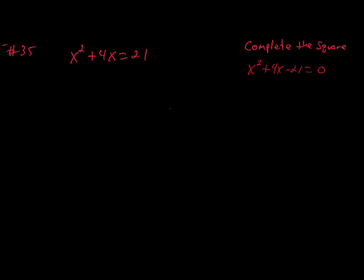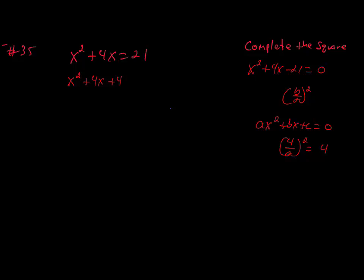So we're going to add 4 over 2 squared to both sides. Simplifying, 4 over 2 is 2, and 2 squared is 4. Adding 4 to both sides gives us x squared plus 4x plus 4 is equal to 21 plus 4, which equals 25. The nice thing about completing the square is that it gives us a perfect square trinomial.